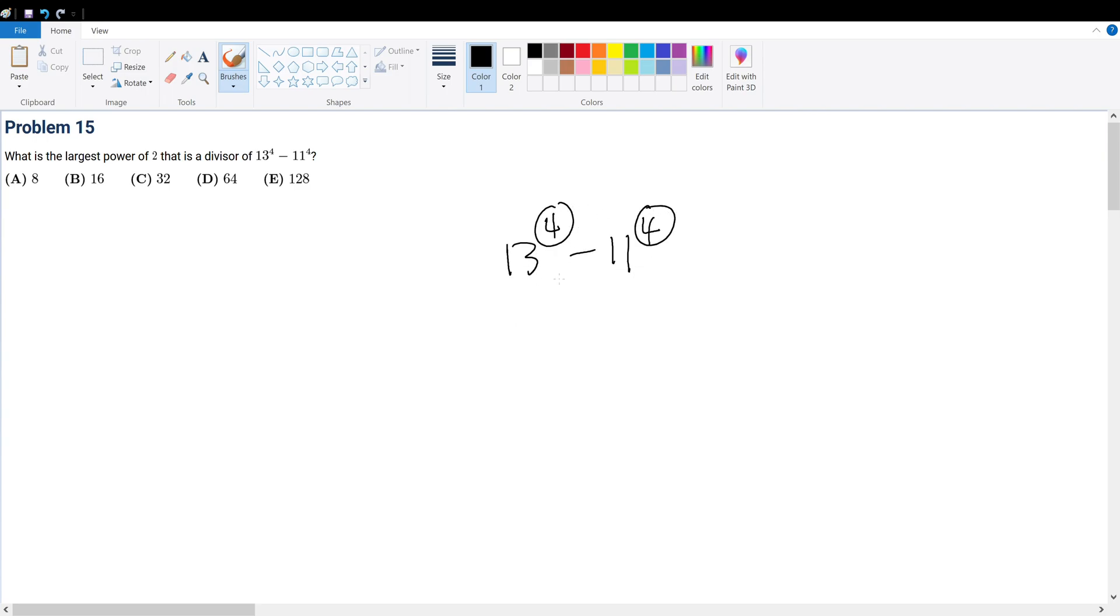Well, there are even powers, right? So we can say this is equal to 13 squared squared minus 11 squared squared. And the reason why I wrote this is because we know the formula: a squared minus b squared is equal to a plus b times a minus b.